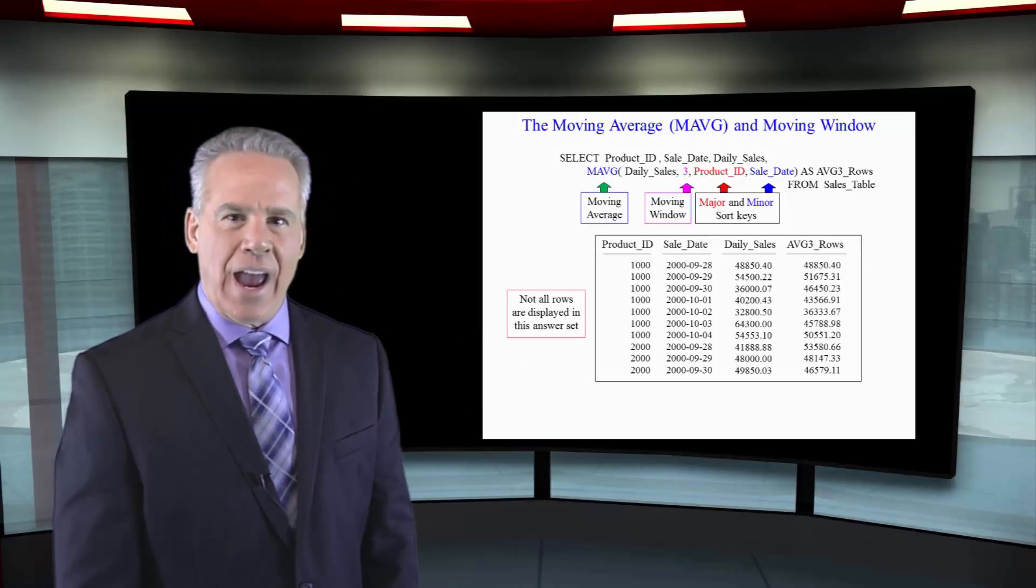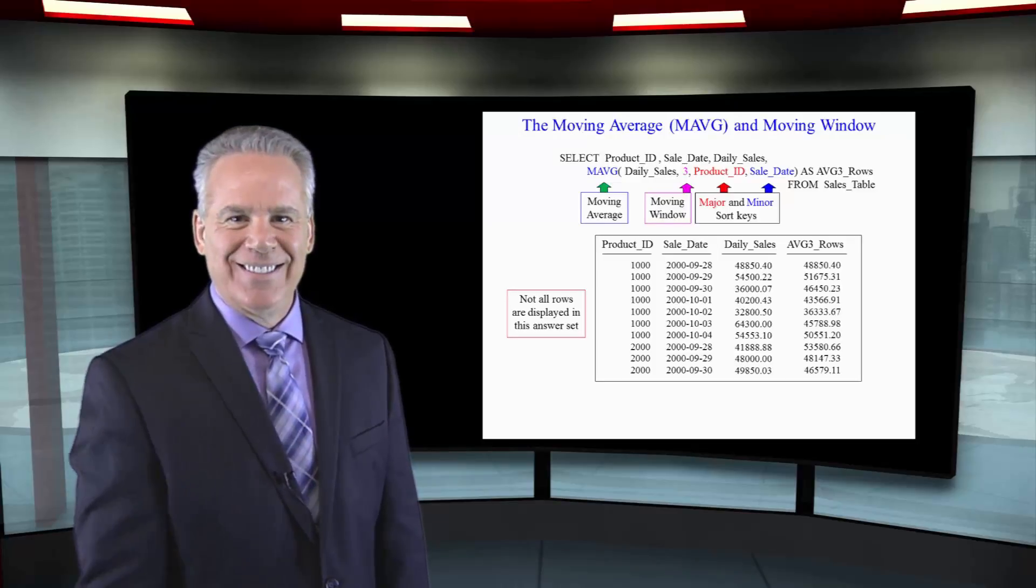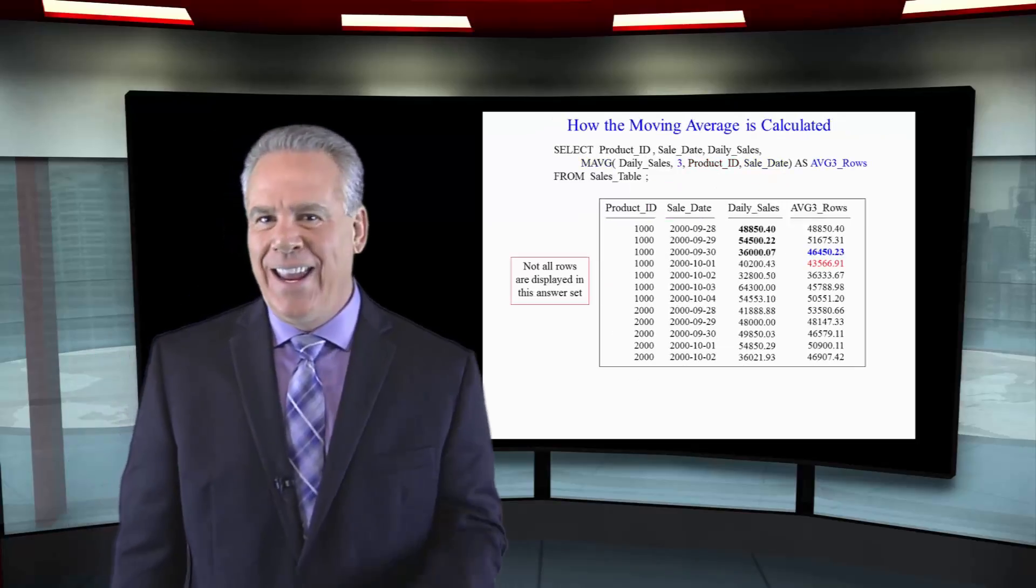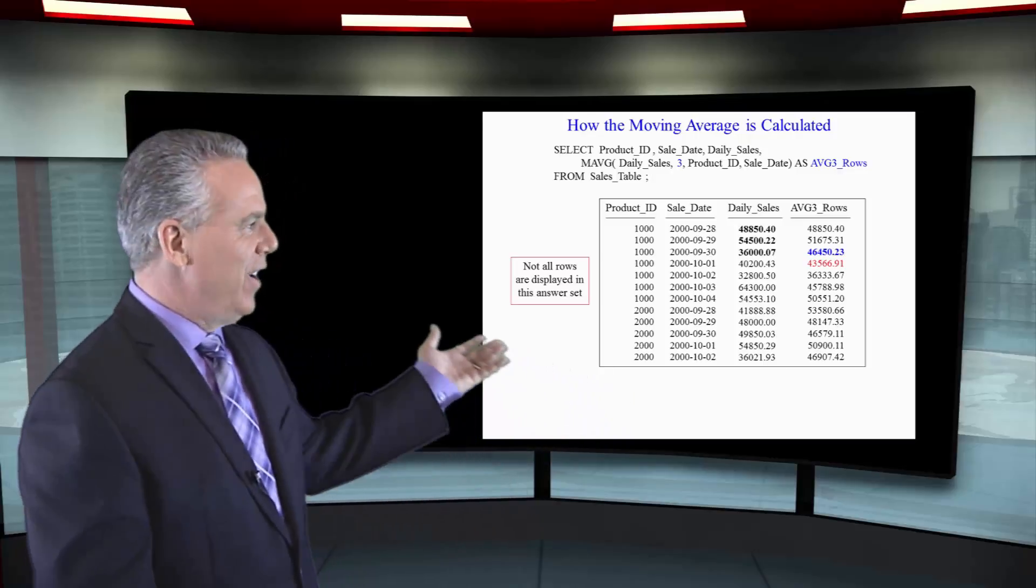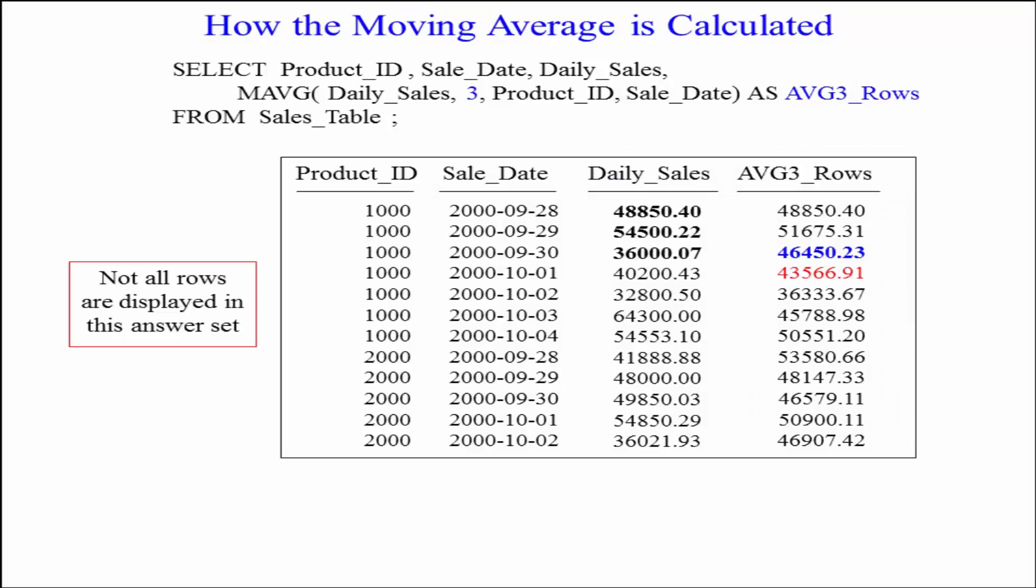Can you calculate how the answer set has been averaged? I've got some answer set information down here and I've colored the third row in blue. 46,450.23.